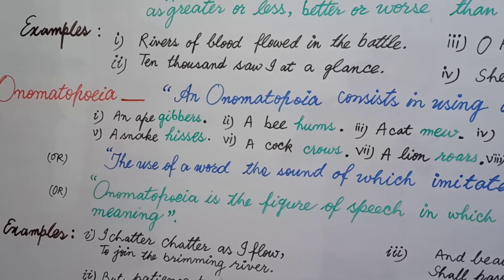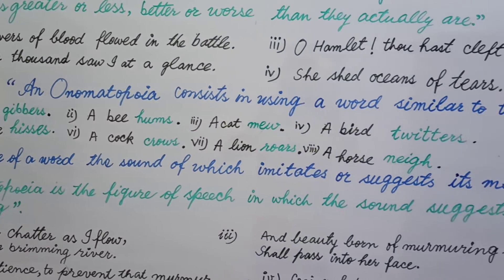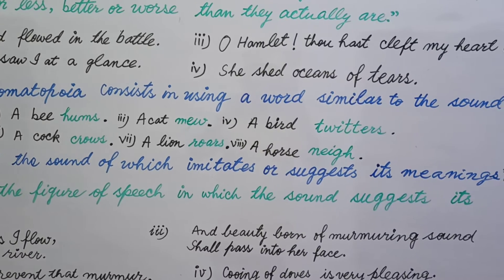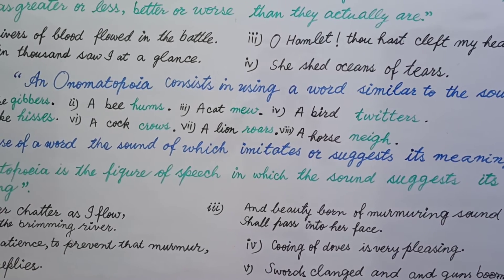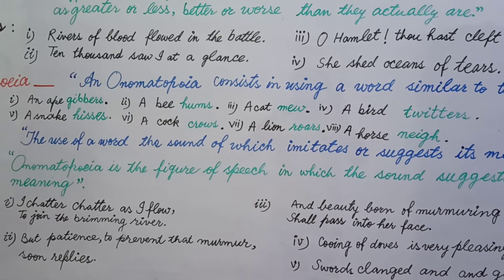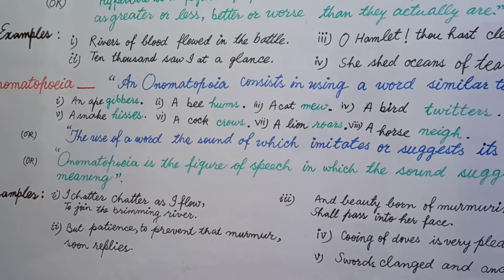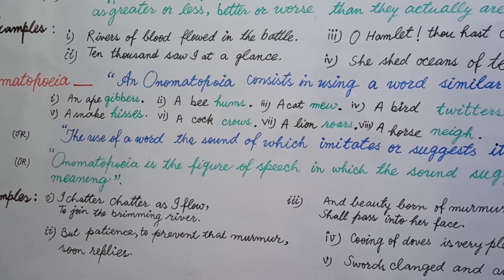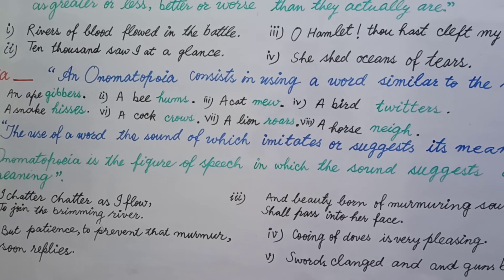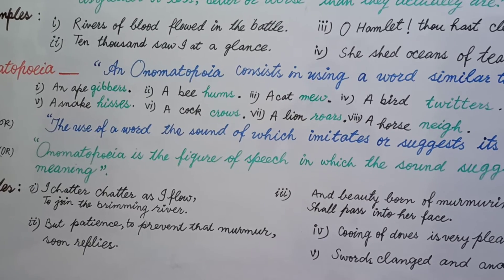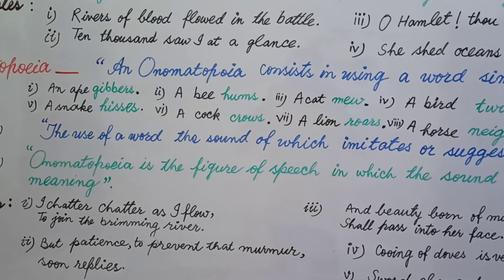Now the seventh figure of speech or poetic device: onomatopoeia. In this figure of speech, onomatopoeia consists in using a word similar to the sound — using a word that represents a sound, and that sound gives the meaning of the thing, animal, or person which creates it. Generally this is related to natural things: the rustling sound of leaves, clinking of swords, humming of bees, mewing of cats, twittering of birds, chattering of birds, chattering of water, roaring of a lion, crowing of a cock, hissing of a snake, and many more such sounds.